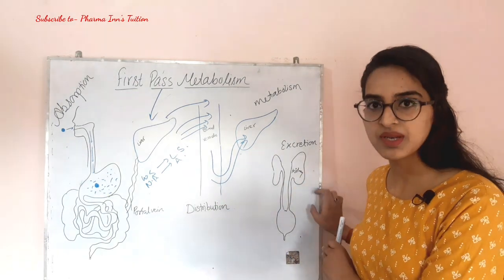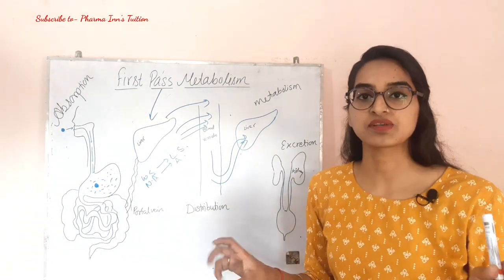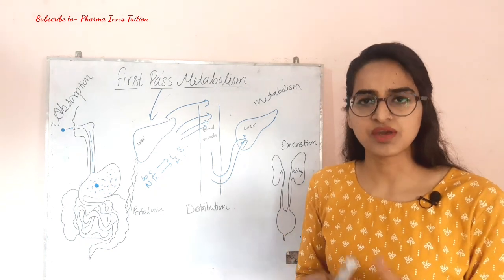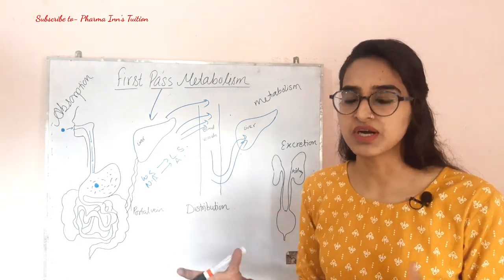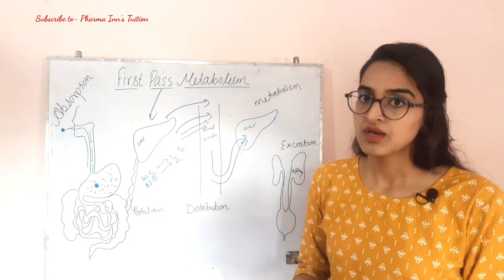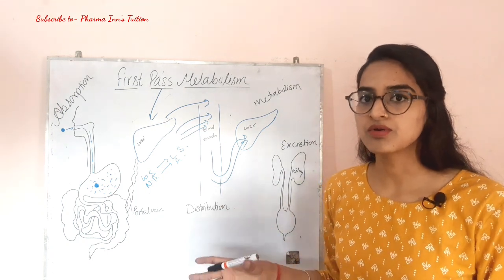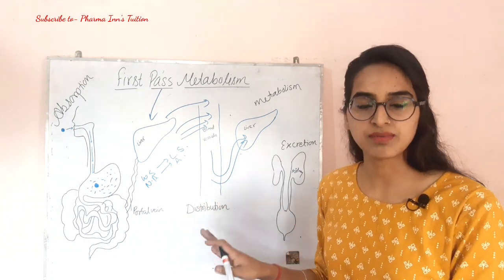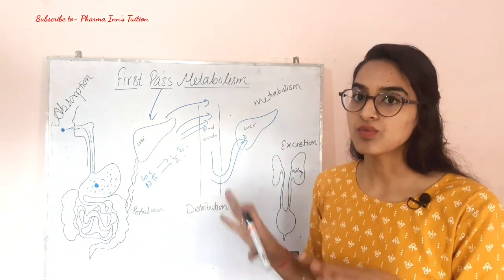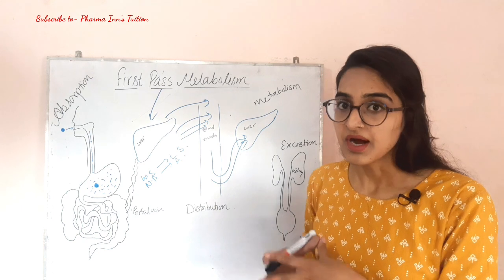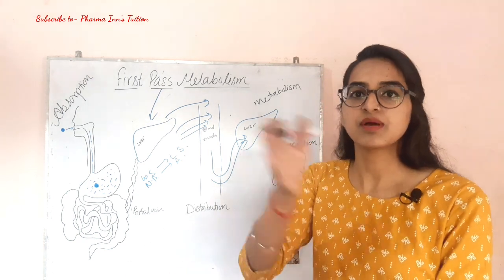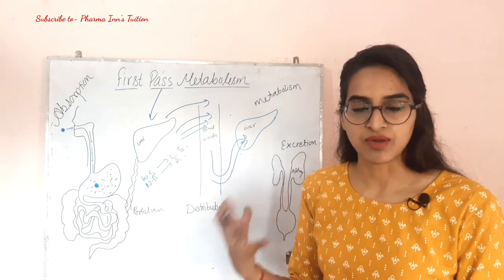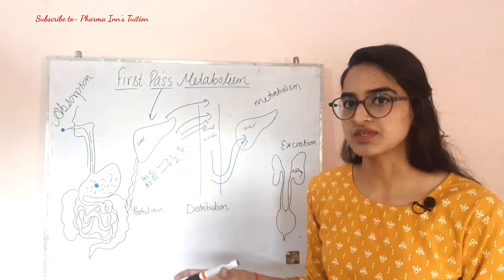This is our excretion process, carried out through nephrons, producing urine as a waste product. Since urine is mostly water, drugs must be water-soluble to be excreted. If a drug remains lipid-soluble, it will be reabsorbed by the body, increasing its concentration and potentially causing toxicity.